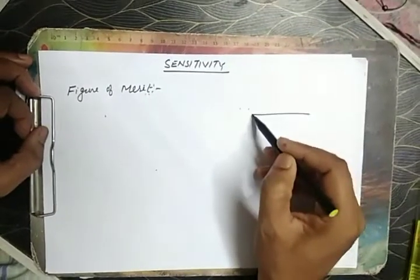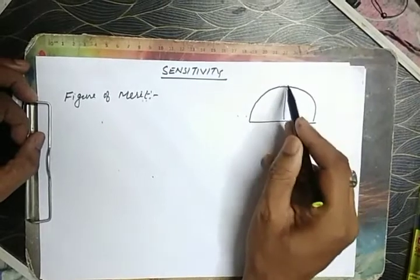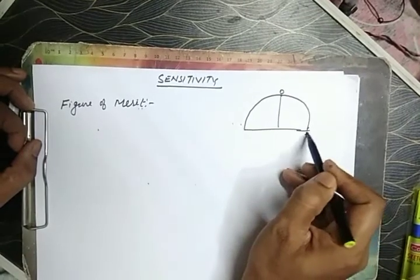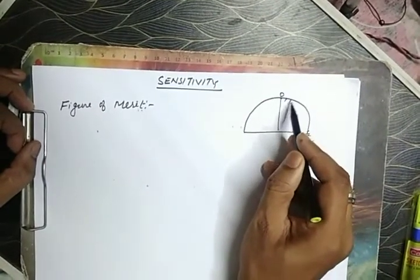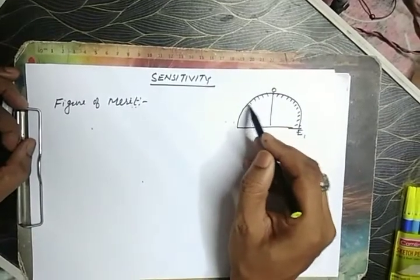In galvanometer, this is the case, this is zero and from this end to this end, E1, we have 30 divisions, 30 divisions in this side, 30 divisions in this side.